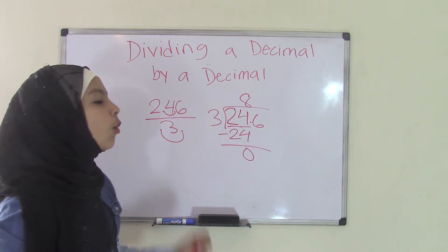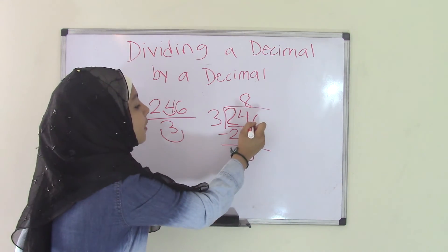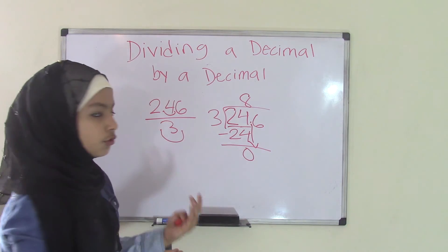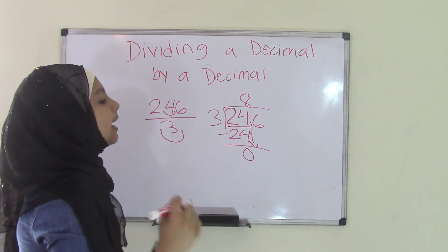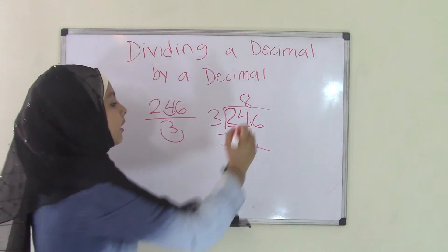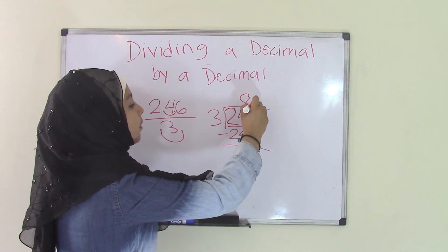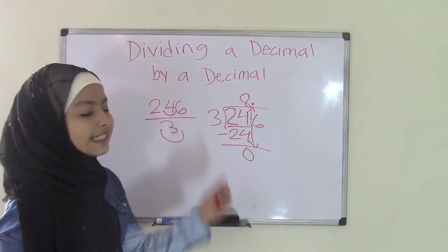Now we have our decimal point. We do not bring the decimal point down like we would normally do. We usually bring the numbers down, right? Instead, the decimal point is going to go straight up over here. So now it becomes 8 point.